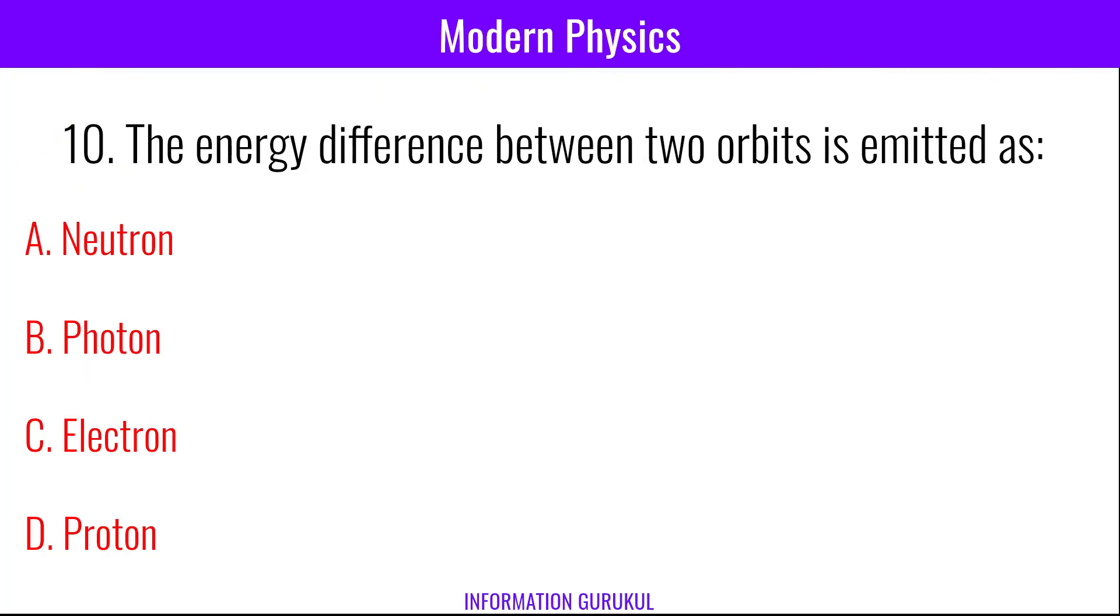The energy difference between two orbits is emitted as photon.